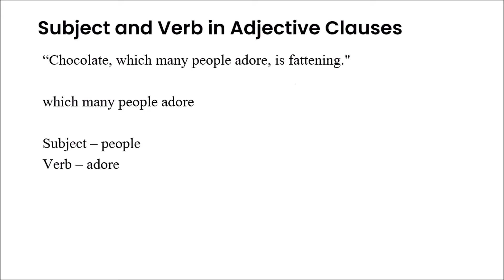Each adjective clause also contains a subject and a verb, all of which work together to describe the original noun being modified. For example, let's look at the sentence: 'Chocolate, which many people adore, is fattening.' The clause 'which many people adore' contains the subject 'people' and the verb 'adore'. Yet it is not a complete sentence by itself. Instead, its job is to provide more information to describe the noun 'chocolate' in the sentence, and that is why it becomes 'chocolate, which many people adore, is fattening.'